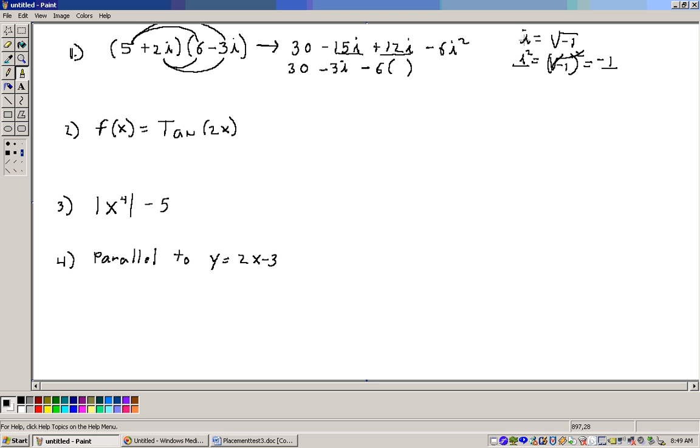Or know that i equals the square root of negative 1 either way. So we can replace the i squared with negative 1. And that gives me 30 minus 6 times minus 1 is plus 6. And 30 plus 6 is 36 minus that 3i. And that's answer D on that one.